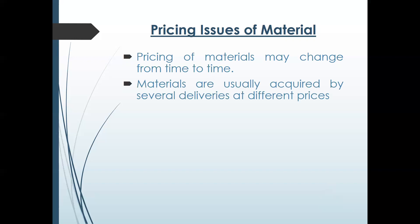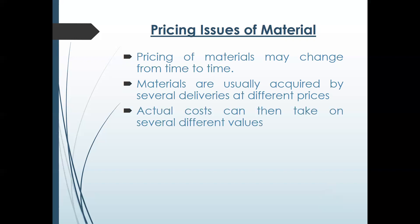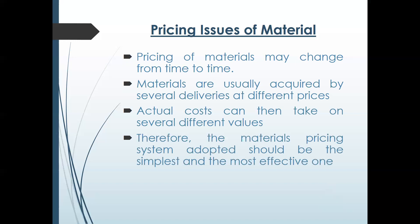Materials are usually acquired by several deliveries at different prices. Normally different suppliers hain, different prices ho sakti hain. Actual cost can then take on several different values. Is liye material ki jo pricing system hai, woh humay adopt karni chahiye jo simple aur effective ho.